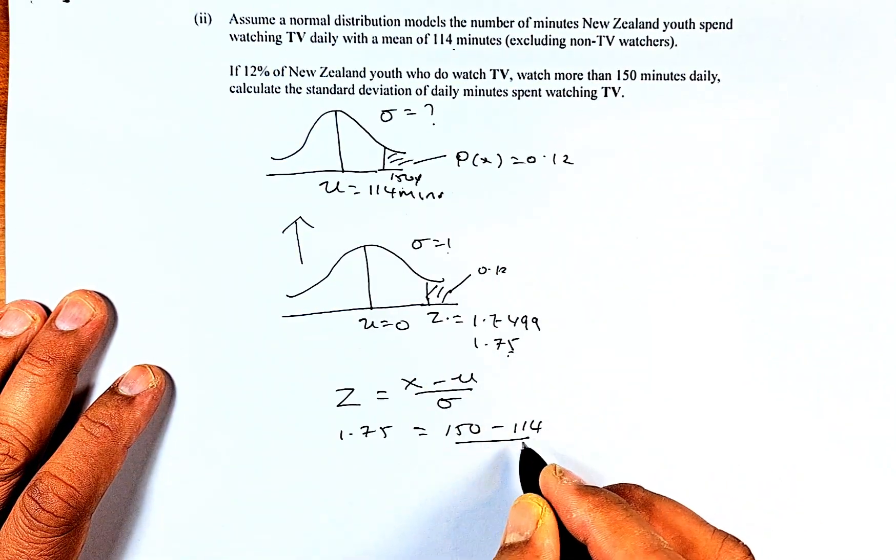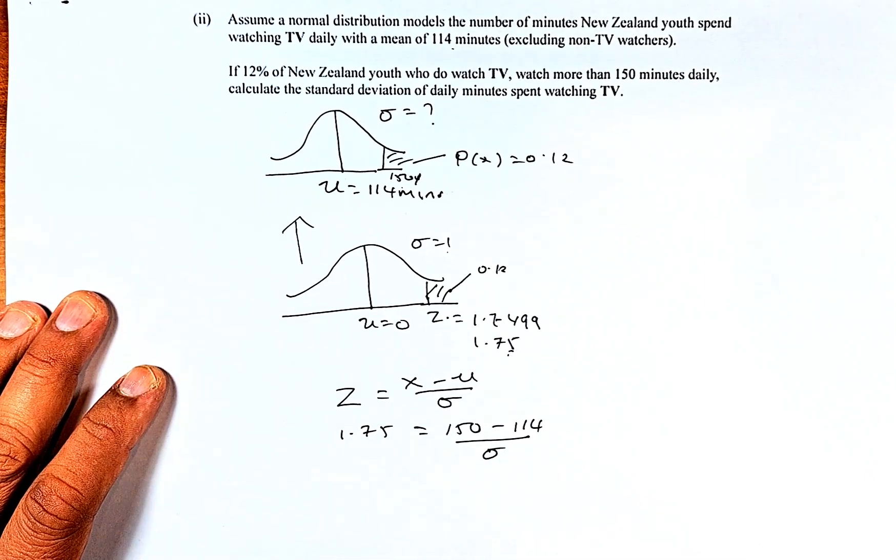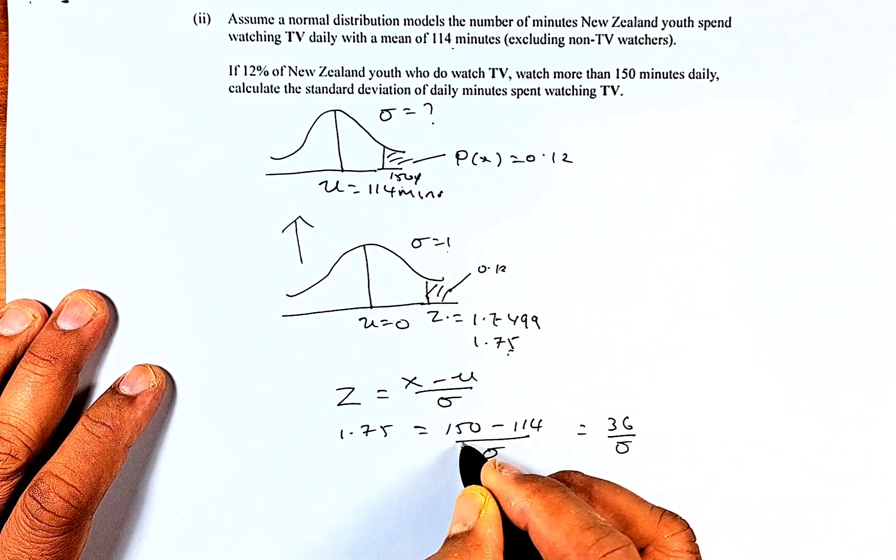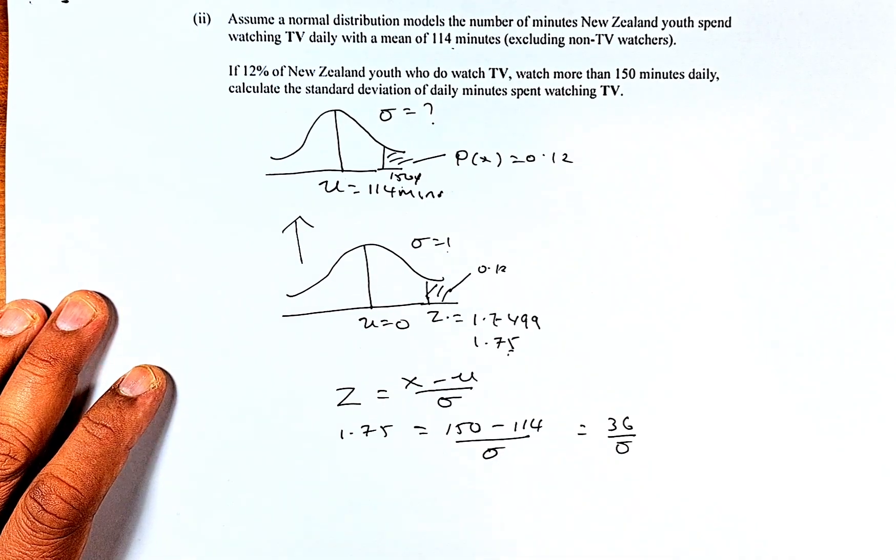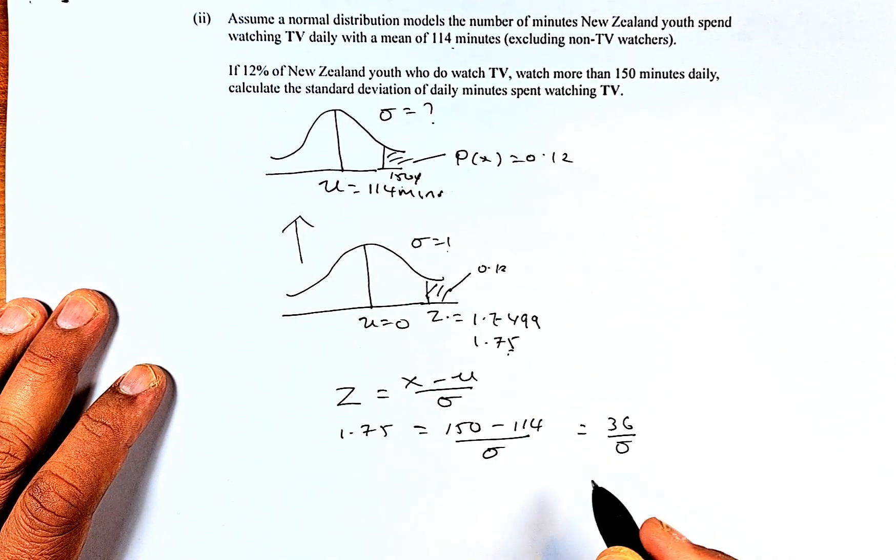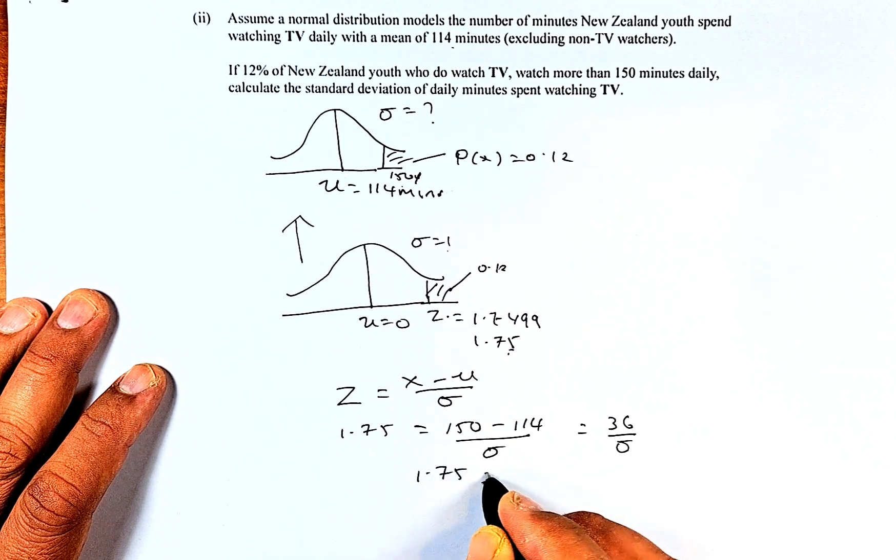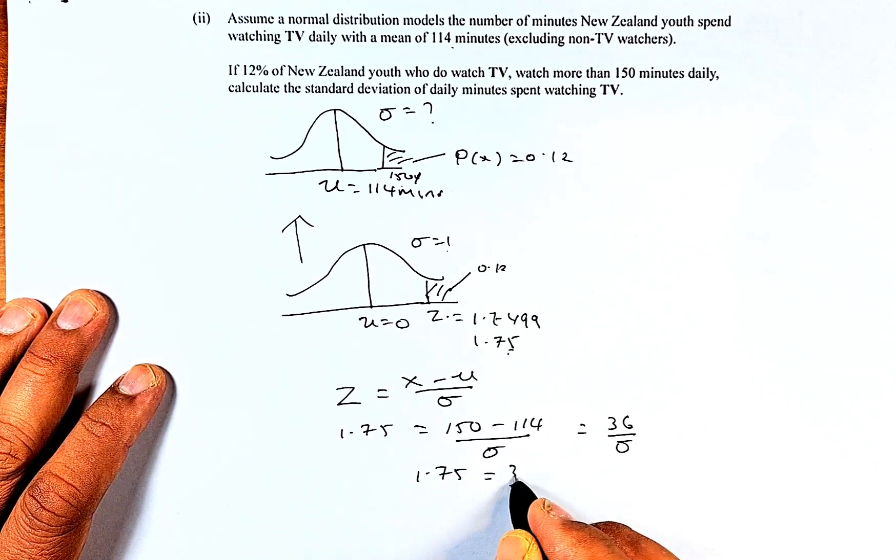The sigma is what we're going to find. So now you calculate them. It's going to be 36 over sigma because 150 minus 114 is 36. So now what we're going to do, 1.75 equals 36 over sigma. If you know your algebra well, you can swap the position here because sigma goes up. It's going to be 36 over 1.75.